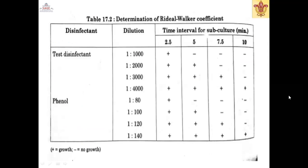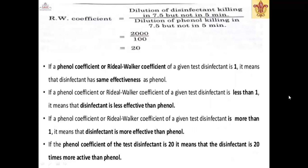Looking at the phenol coefficient chart, we tested the test disinfectant at a dilution of 1 in 2000 and phenol at 1 in 80. We observe results at intervals of 2.5 minutes, 5 minutes, 7.5 minutes, and 10 minutes. A plus sign indicates growth; a minus sign indicates no growth. For example, at a dilution of 1 in 1000 for the test disinfectant, growth is seen at 2.5 minutes, but at 5, 7.5, or 10 minutes there is no growth — demonstrating the best antimicrobial activity in the same way the formula is applied.